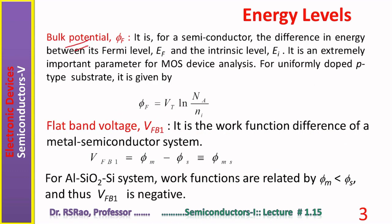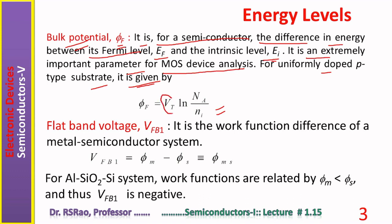Another term is bulk potential, with units of volts and symbol φ_F. Bulk potential is, for a semiconductor, the difference in energy between the Fermi level E_F and intrinsic level E_i. It is an extremely important parameter for MOS device analysis. For a uniformly doped p-type substrate, it is given by: φ_F = V_T × ln(N_A / n_i), where V_T is the volt equivalent of temperature (26 mV at room temperature), n_i is intrinsic carrier concentration, and N_A is acceptor impurity concentration.